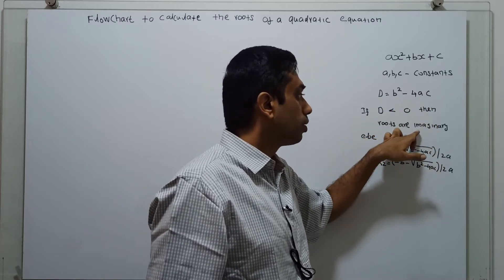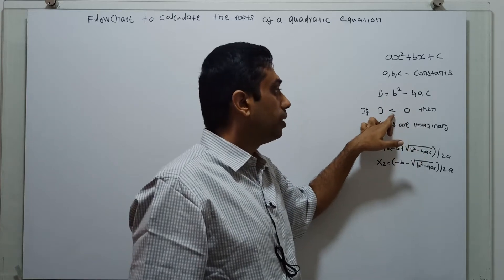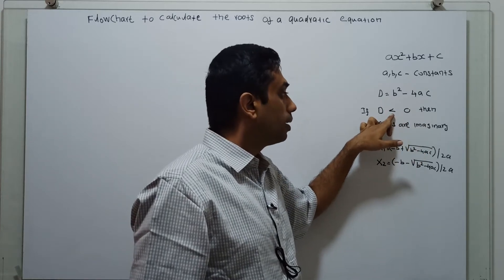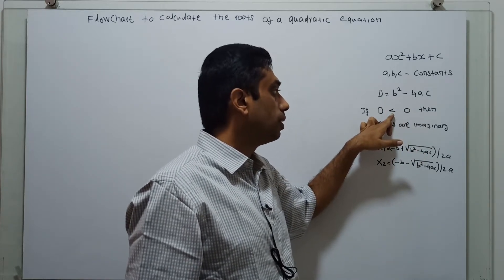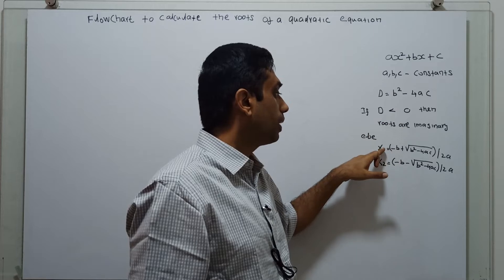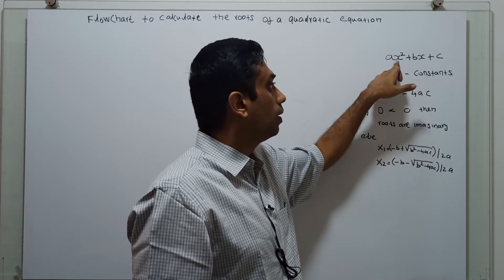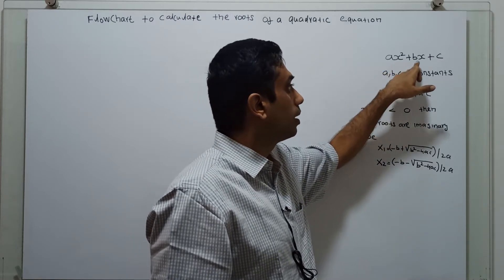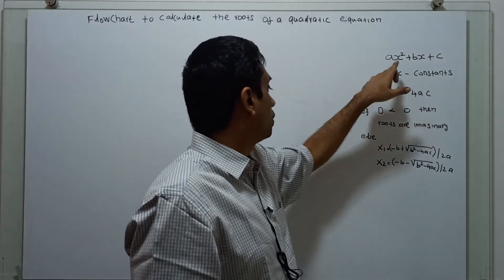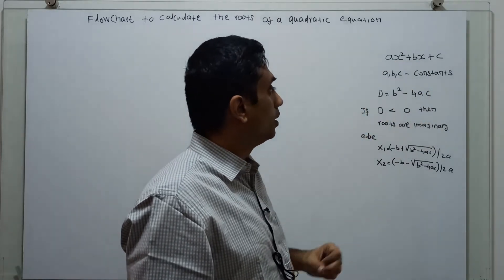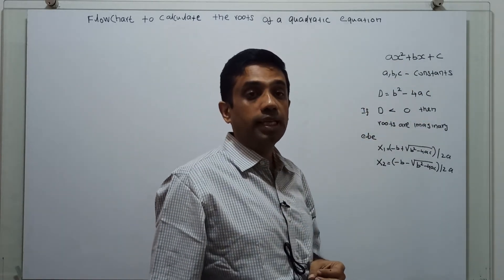then the roots are imaginary. If the discriminant is greater than or equal to 0, we have to calculate x1 and x2. The value of x which solves the quadratic equation is known as the roots of the quadratic equation.